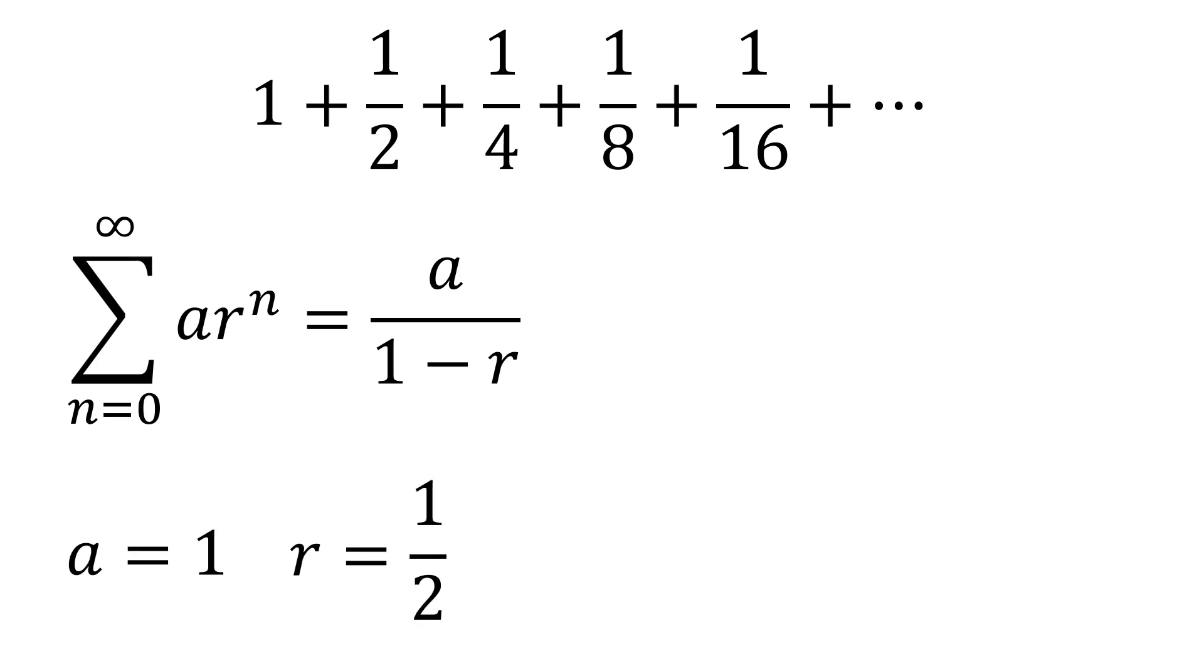But using this formula with our a equals one and our r equals a half, we get that one over one minus a half. One minus a half on the bottom becomes a half. One divided by that gives us two as our picture suggested.